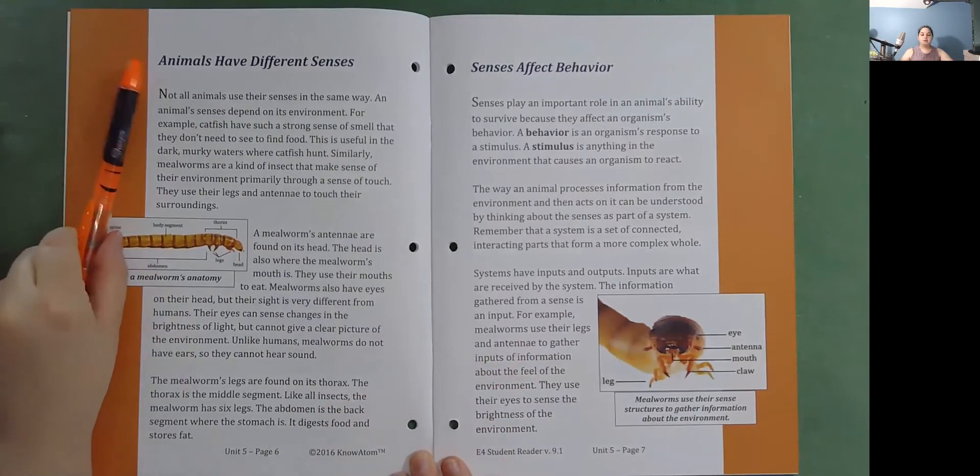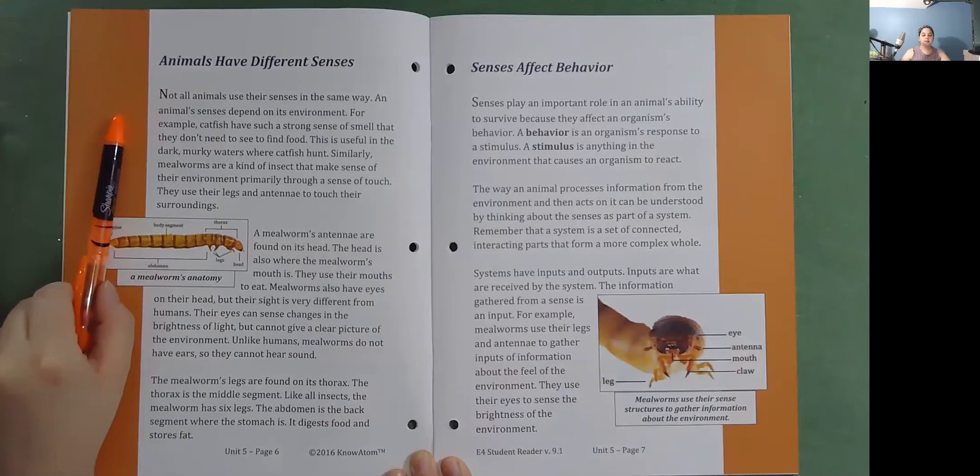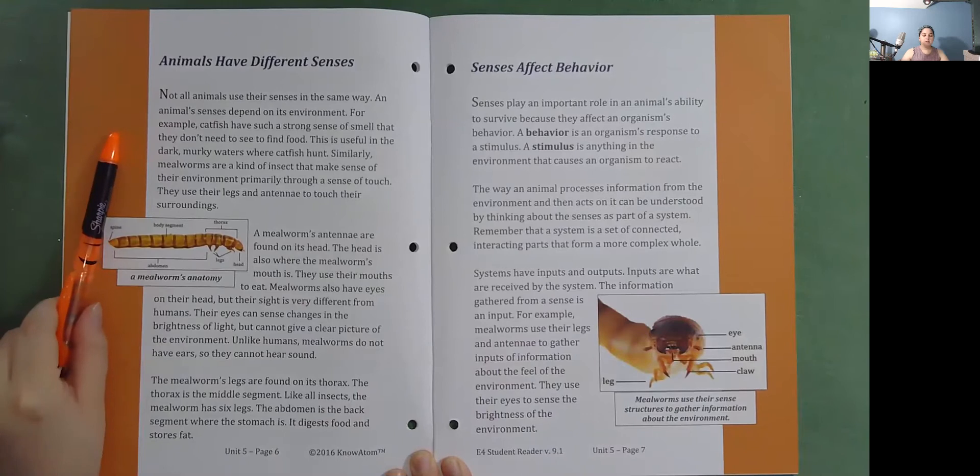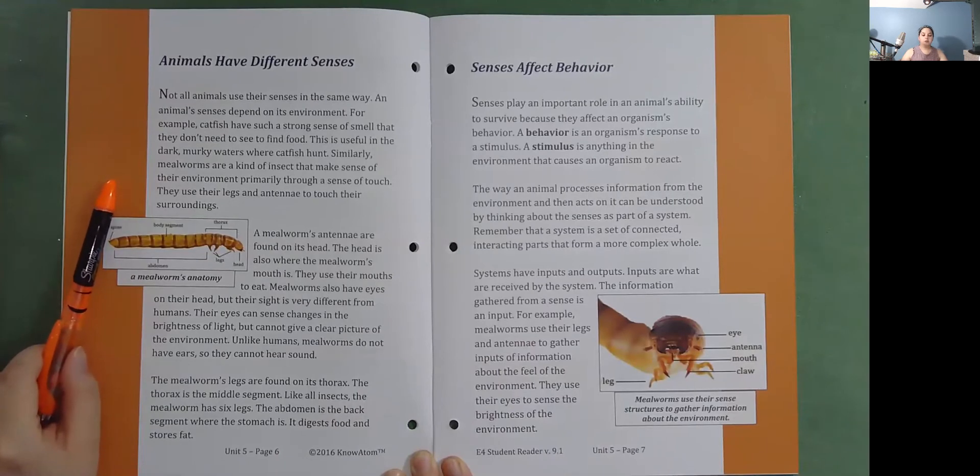Animals have different senses. Not all animals use their senses in the same way. An animal's senses depends on its environment. For example, catfish have such a strong sense of smell that they don't need to see to find food. This is useful in the dark, murky waters where catfish hunt. Similarly, mealworms are a kind of insect that makes sense of their environment primarily through a sense of touch. They use their legs and antennae to touch their surroundings.